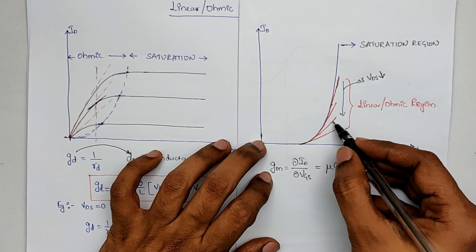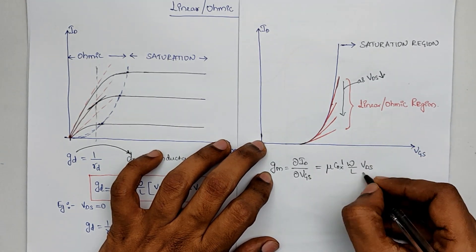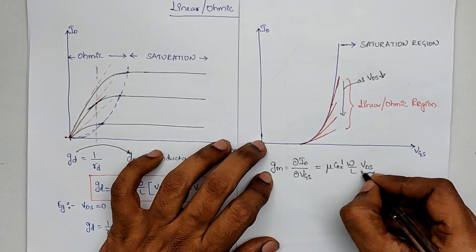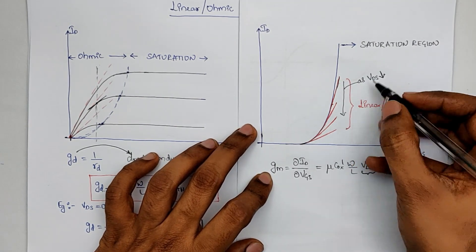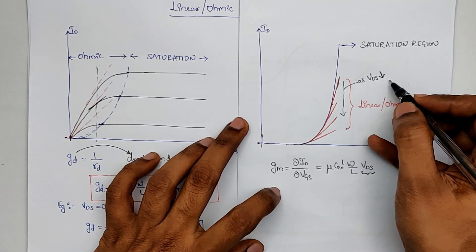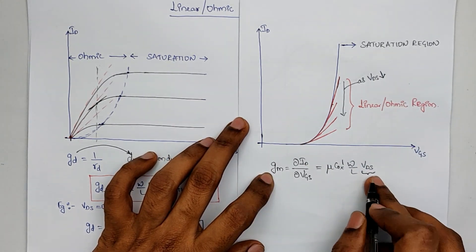In this case, it will be constant, constant, constant. And of course, it depends on VDS as we have seen, because the slope keeps decreasing as VDS is decreasing. And that's why GM is directly proportional to VDS here.